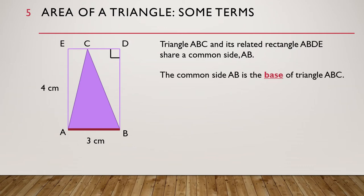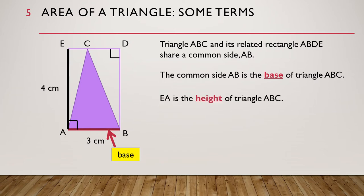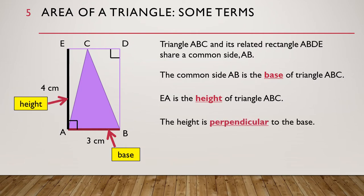The common side AB is called the base of triangle ABC. The other side of the related rectangle is EA, which is this. EA is called the height of triangle ABC. The height is perpendicular to the base. Perpendicular means at right angle. We can see the right angle here.